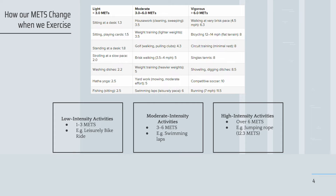We'll look at three different types of activities to determine how many METs they typically are. Low intensity activities involve 1–3 METs. These can include sitting at a desk, as shown in the table, with a 1.3 MET value. Sitting and playing cards is 1.5, standing at a desk is 1.8, and it goes up to something like fishing while sitting, which is 2.5 METs.